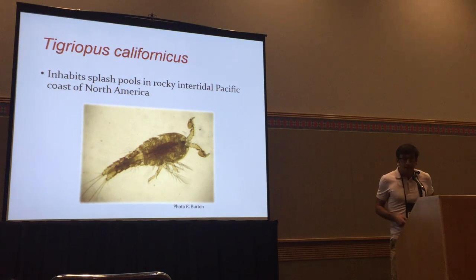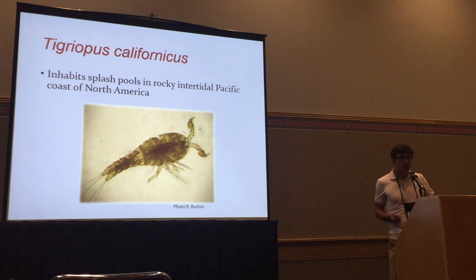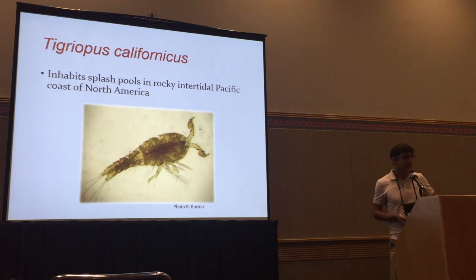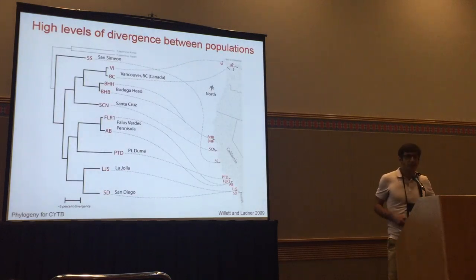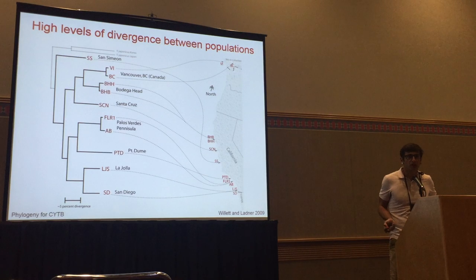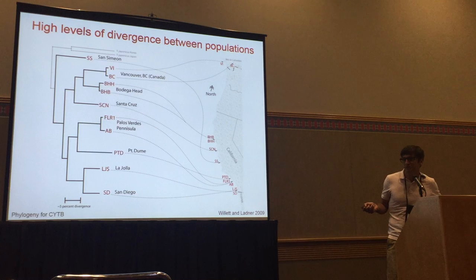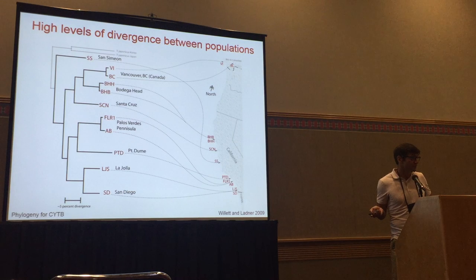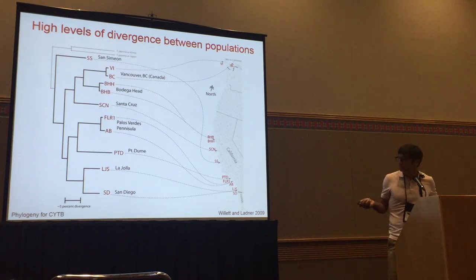I am studying these questions in the copepod Tigriopus californicus. They live in splash pools high up on the intertidal zone, all the way from Baja, Mexico to Alaska. The populations are very segregated and the mitochondrial DNA is remarkably divergent. We have two populations in San Diego about eight kilometers apart, and the mitochondrial DNA is almost 10% different. From San Diego to near LA, the mitochondrial DNA is almost 20% different.